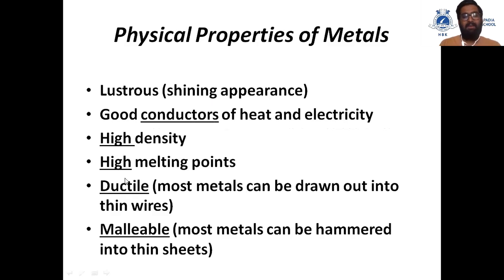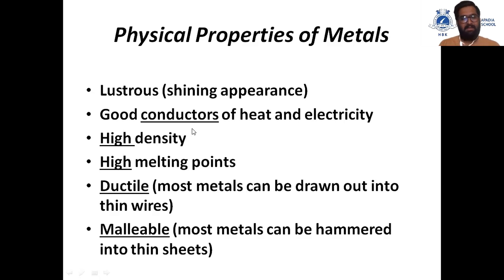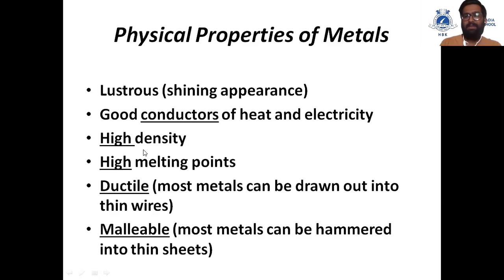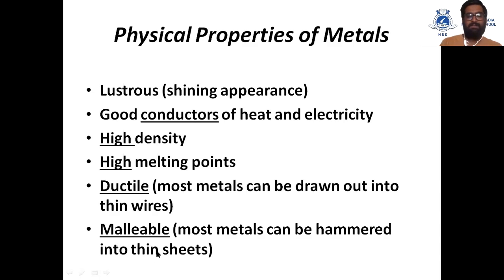Metals have high melting points because the intermolecular force between atoms is higher. Metals are ductile, meaning most metals can be drawn out into thin wires. Metals are malleable, meaning most metals can be hammered into thin sheets.